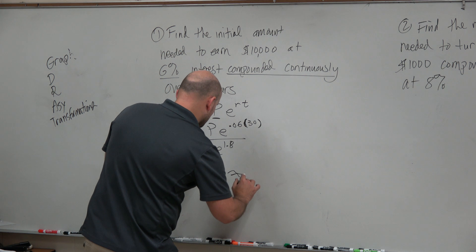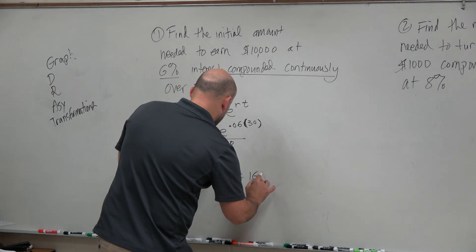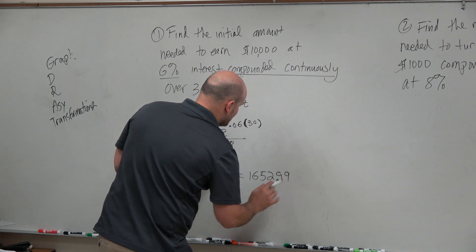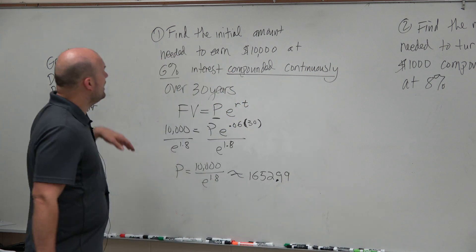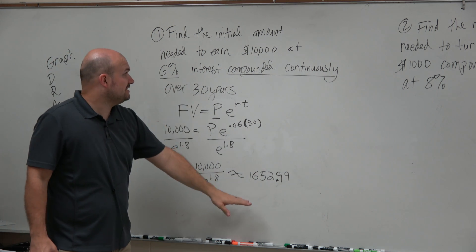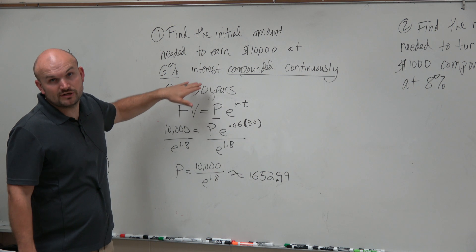And we are going to get approximately $1,652.99 if we round it up. So therefore, that's going to be your approximate initial value that you'll need to earn $10,000 over 30 years.